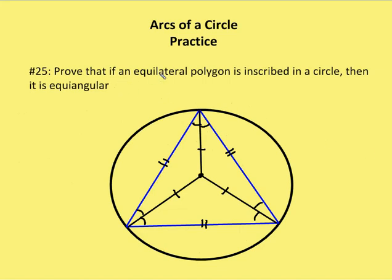In this problem, we're going to prove that if an equilateral polygon is inscribed in a circle, then it is equiangular. So let's just identify this as A, B, and C. In this case, we're going to identify why this is the case for a polygon based on two examples. One is a triangle and one is a square. So let's start with the triangle first, and you'll see the pattern probably after I finish talking about the square.